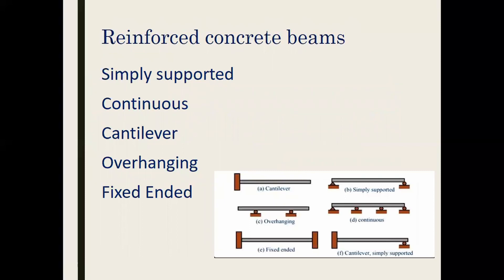The beam types you need to know — and be able to draw — are: a simply supported beam, continuous beam, cantilever, overhanging, and fixed ended. These are labeled B, D, A, C, and E respectively. A combination of types, as in F, may also be asked.